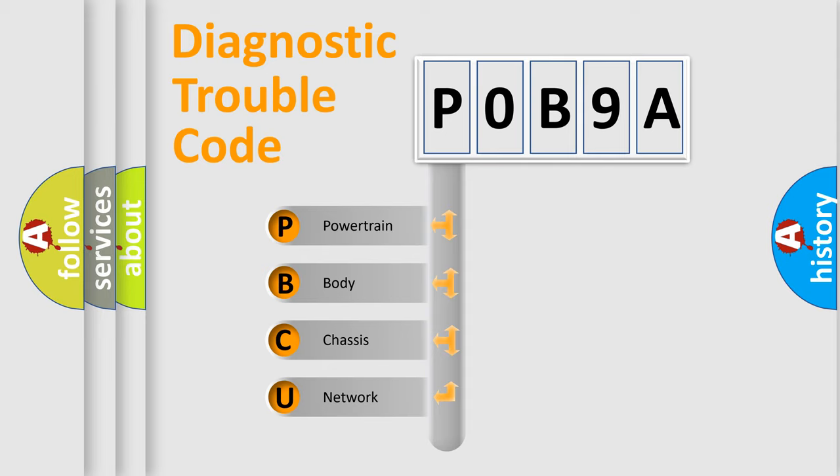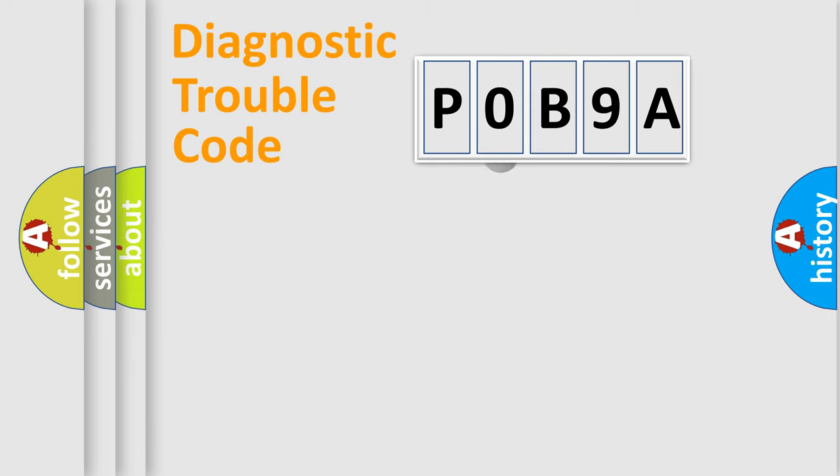We divide the electric system of automobiles into four basic units: Powertrain, Body, Chassis, and Network. This distribution is defined in the first character code.